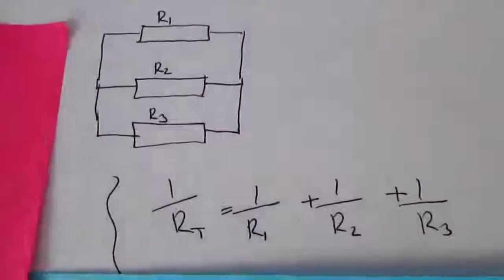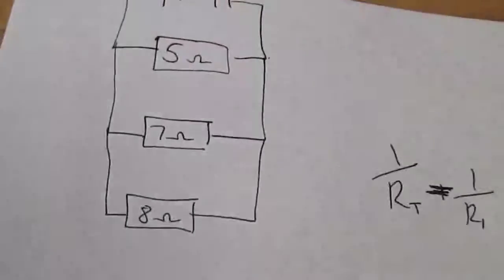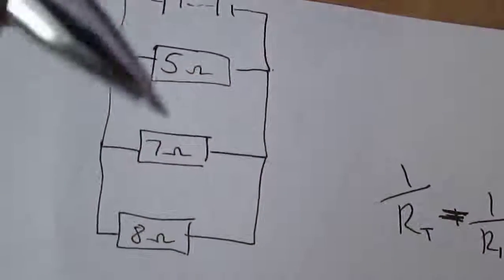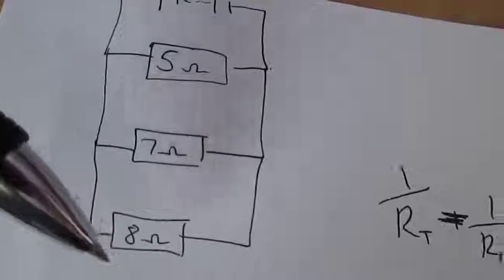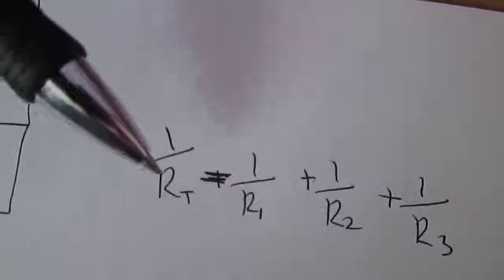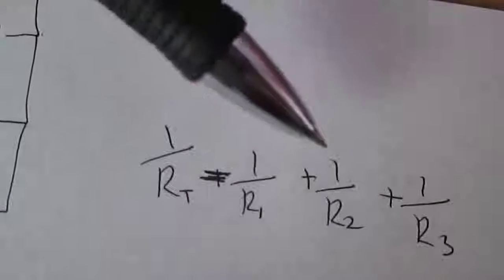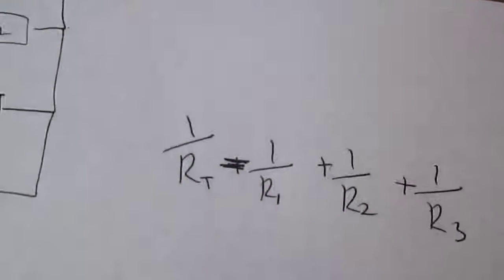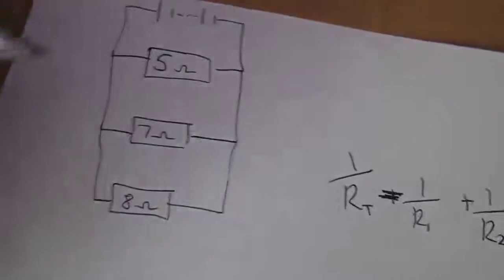Okay, so let's go through an example. Here we have three resistors of different values: we have 5 ohms, 7 ohms and 8 ohms. As always you write out your formula that total resistance equals one over R1 plus one over R2 plus one over R3. It doesn't matter which one I call R1, R2 or R3.